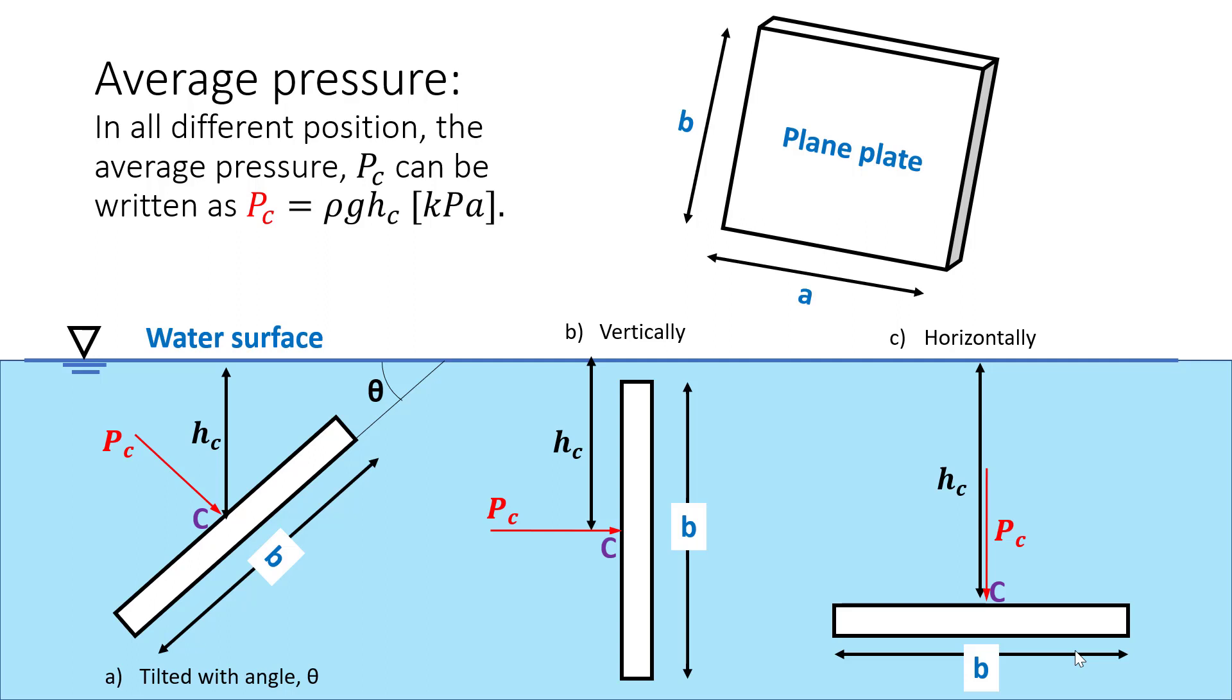Now let us imagine that we have a plane surface plate with height B and length A. The plane then is submerged in the water in three different positions, which is tilted by a degree of an angle, submerged vertically in the water, and the position is completely submerged horizontally in the water.